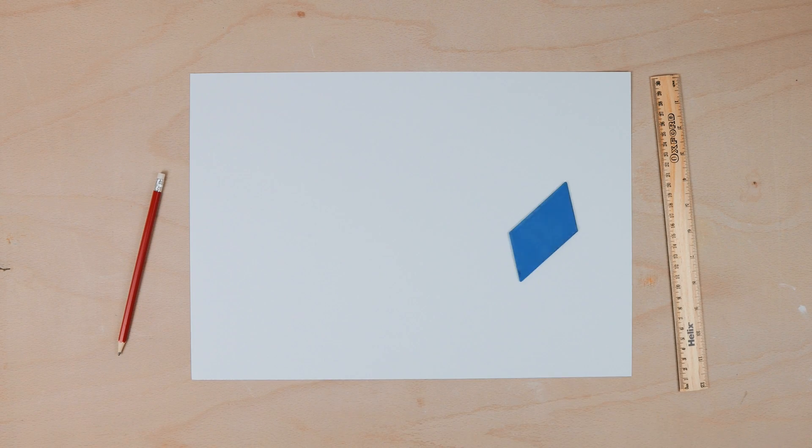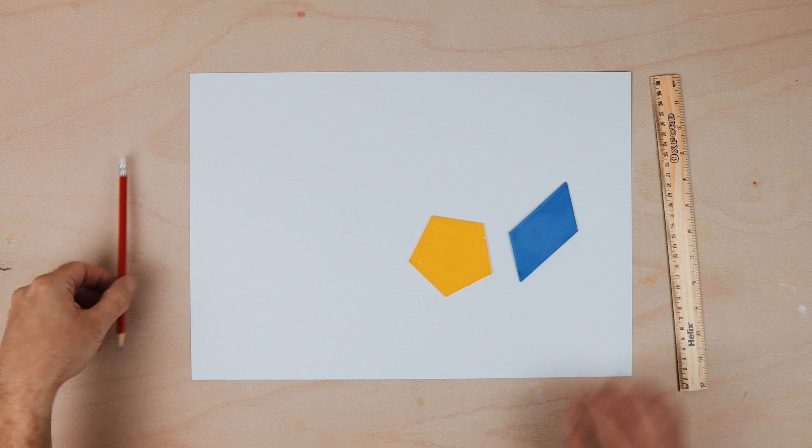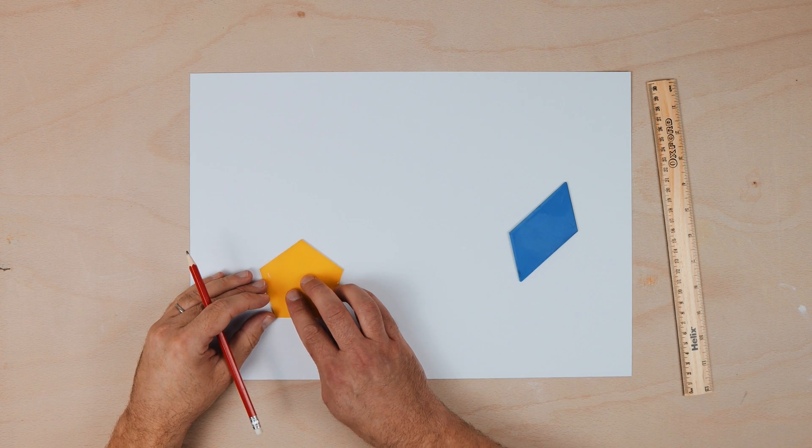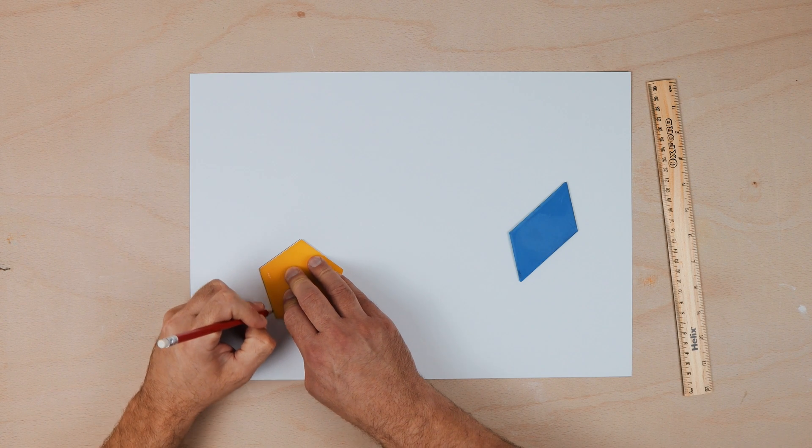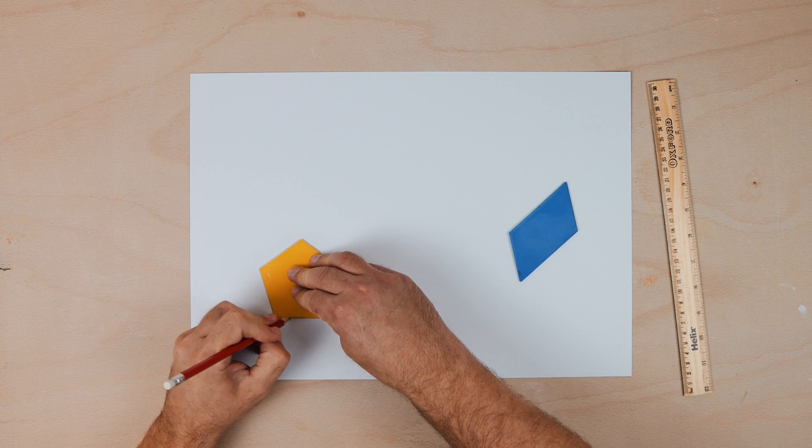And if you have pupils who really struggle with their ruler for whatever reason this may be, give them stencils to draw around. Understanding the concept and technique is where the learning focus should be.